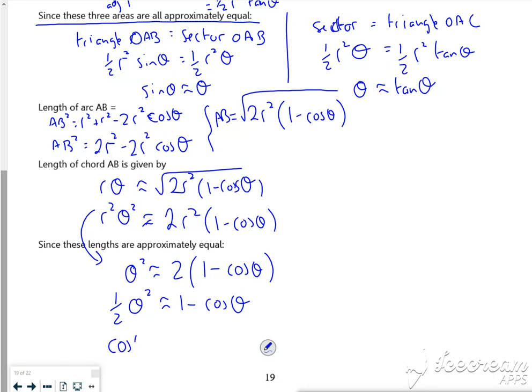Switching over, cos theta is approximately 1 minus one-half theta squared. Jeez, can you actually read what I've written? The boards are slightly out.